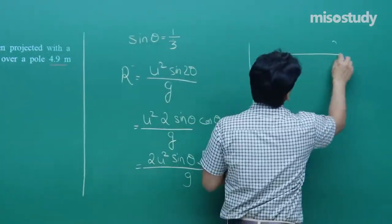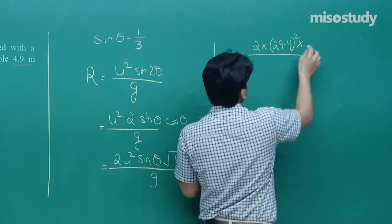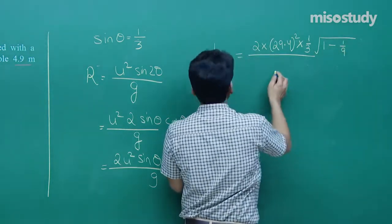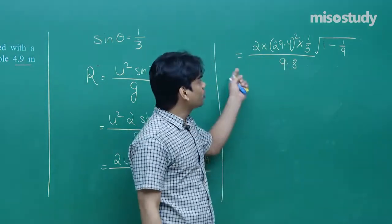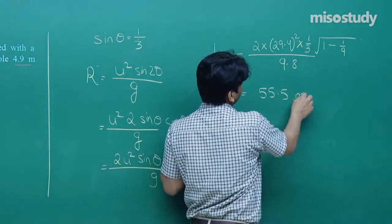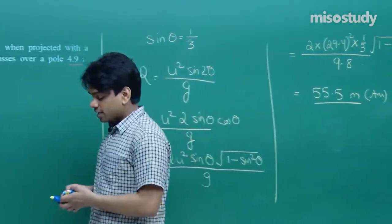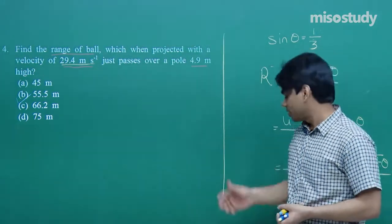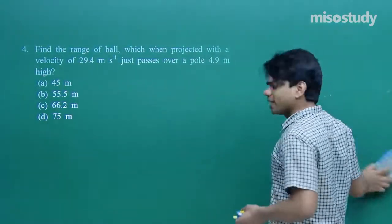R = 2·(29.4)²·(1/3)·√(1 − 1/9) / 9.8. After calculation, this gives 55.5 m. The range of the ball is 55.5 m, so option b is the correct answer. Remember the three basic projectile formulas: maximum height, range, and time of flight — plus the trajectory equation.